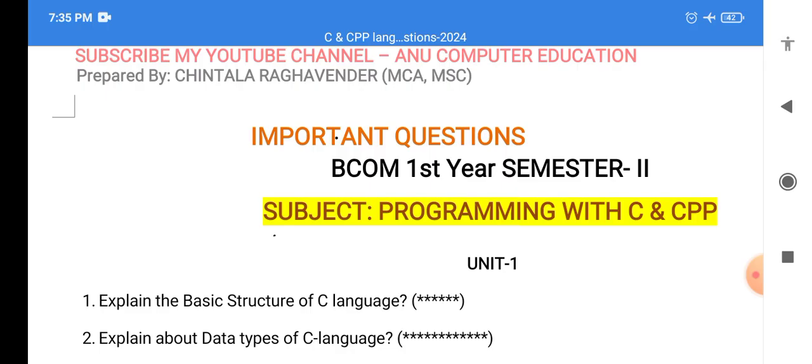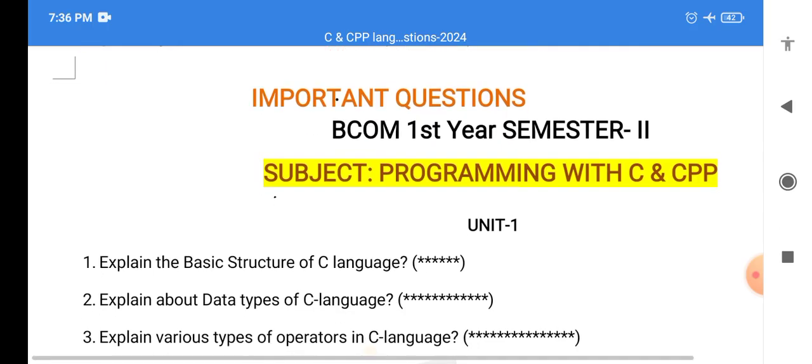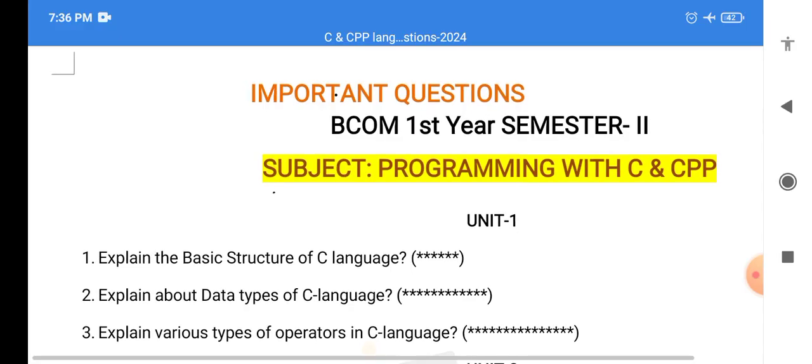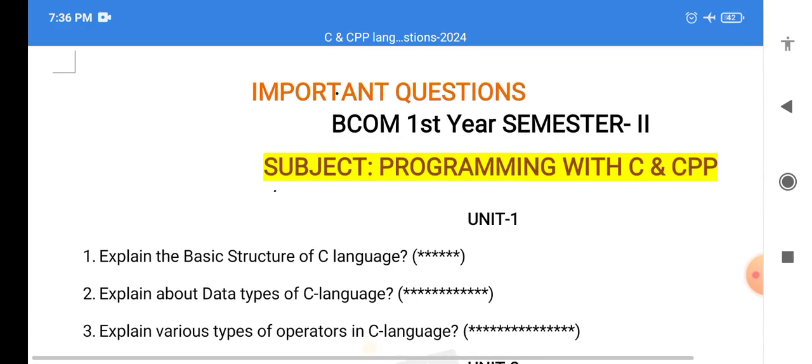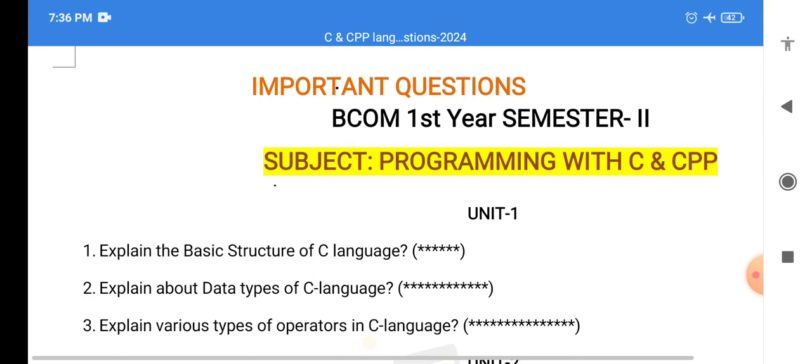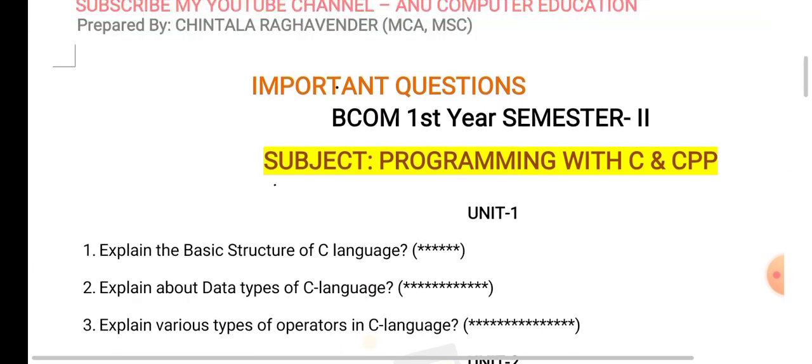Very important in C language, so this you need: one basic structure of C and data types and operators in C. So these three questions if you learn, definitely can score 10 by 10 marks, 8 to 10 marks you can score in unit number one. So these are very very important questions.